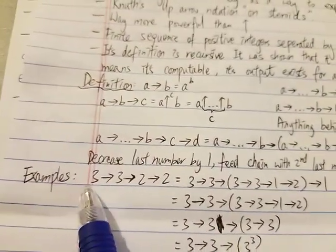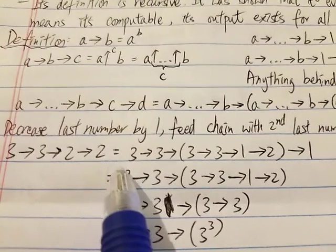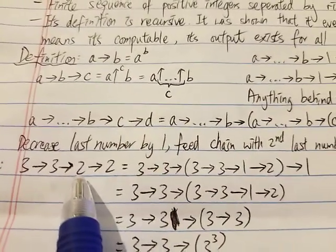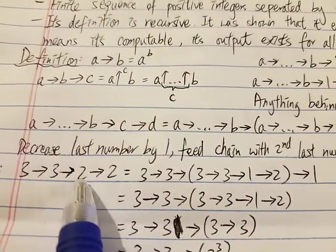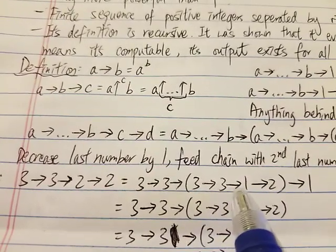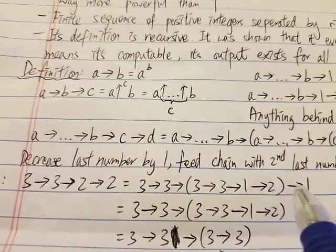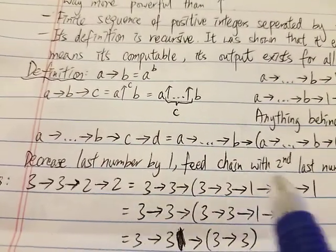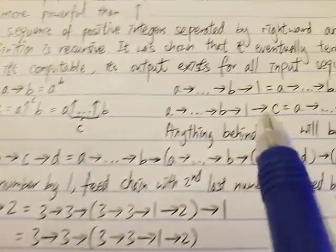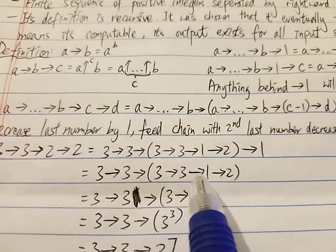Let's look at one example: 3→3→2→2. What does that mean? It becomes 3→3→(3→3→1→2)→1. Since everything behind arrow 1 is ignored, 3→3→1→2 simplifies to 3→3→1, and then again ignoring the 1 and everything behind it gives 3→3. So we get 3→3→3→(3→3→1)→1, which further simplifies step by step.